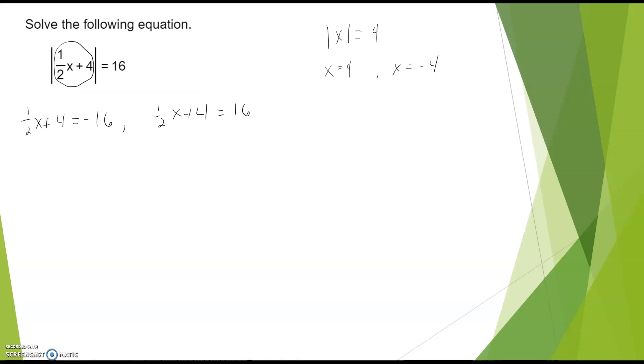From here, pretty straightforward. Multiply both sides by 2: negative 40, minus 4 minus 4. For the other case, ½x equals 12. Multiply both sides by 2, x equals 24.